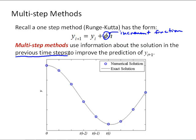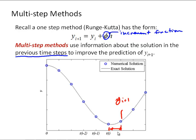For example, we have a numerical solution with blue points here over an exact solution, and if we want to find a slope to predict the value y_i+1, Runge-Kutta methods are going to use everything in between i and i+1 to make that prediction, and that's what makes them a one-step method.